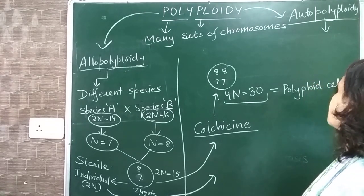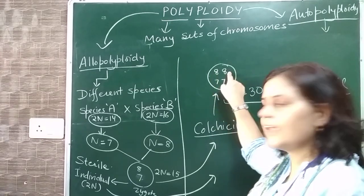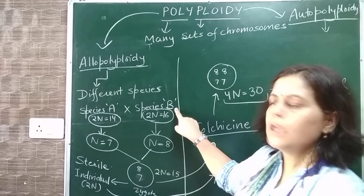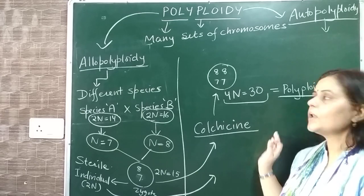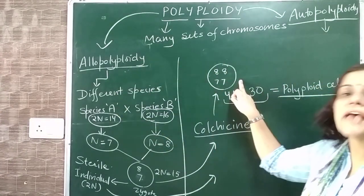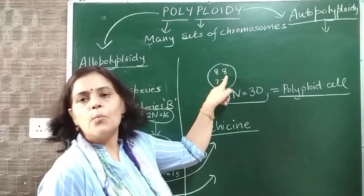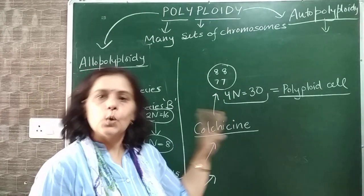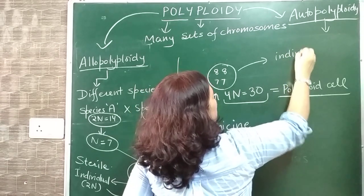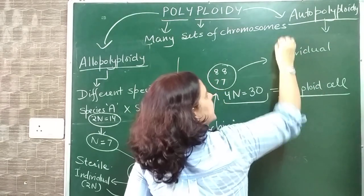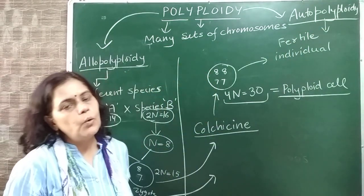This chromosome - the chromosome sets are four: two sets from Species A and two sets from Species B. So this type of polyploid is known as allopolyploid. This cell can now undergo meiosis. The individual that forms from this will be fertile - that individual can produce gametes and can undergo reproduction.